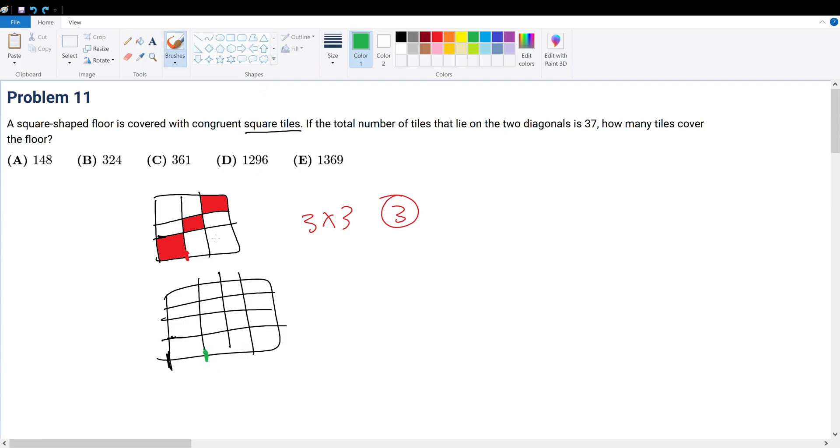Paint is kind of weird, but anyway, we have this. So if we color—color, color, color—then we have four. This is a 4x4 square, and I have four on the diagonal. So a square covered floor with congruent square tiles, where the total number of tiles that lie on the two diagonals is 37, how many tiles cover the floor? Well, this is assuming that this is a 1x1, and since the total number of tiles that lie on the two diagonals is 37...